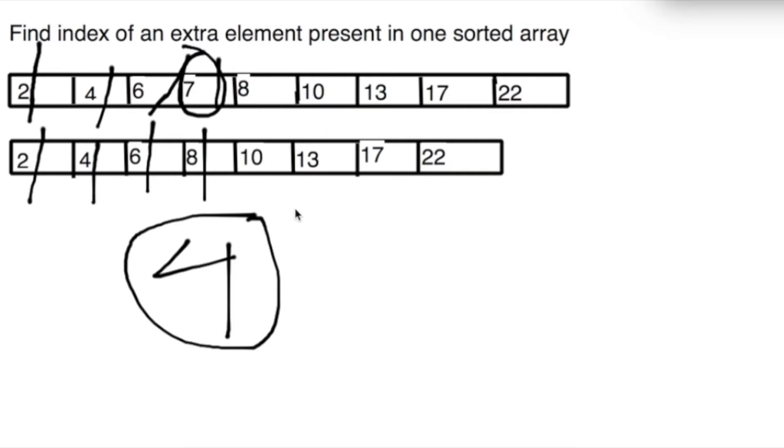So what about the running time? In worst case we have to go through all the elements in both arrays, so it will take Big O of n. Can we improve over that? Of course we can.